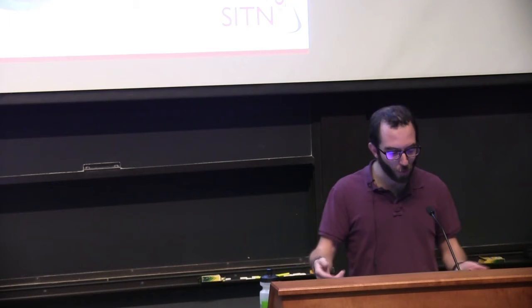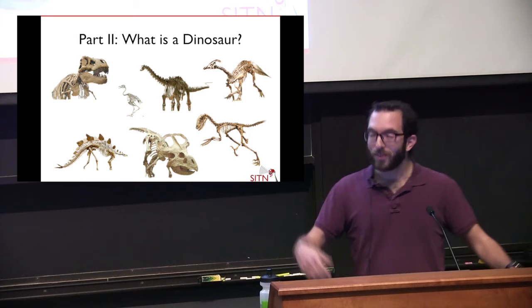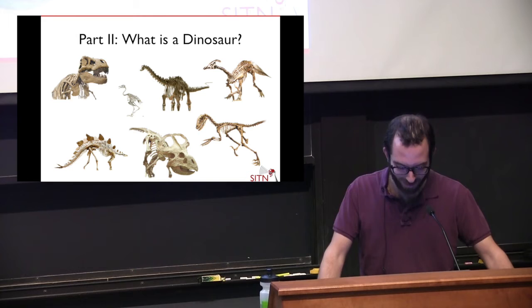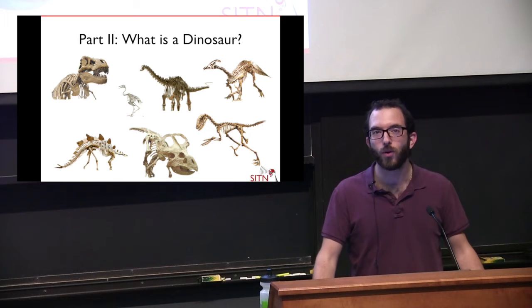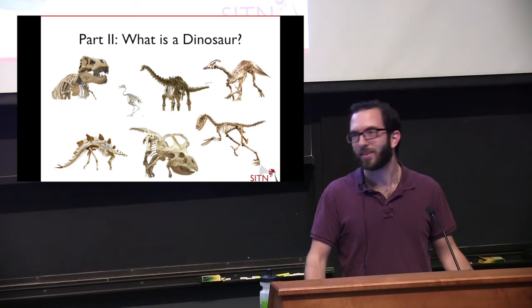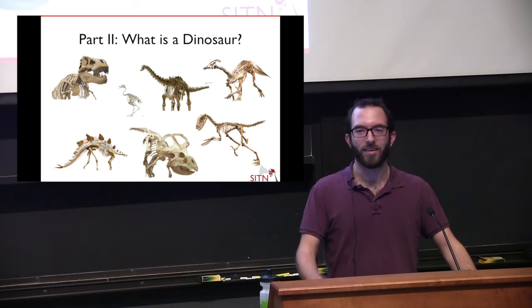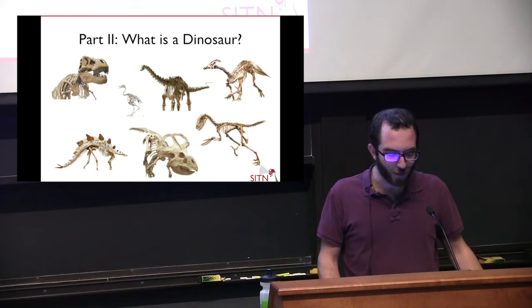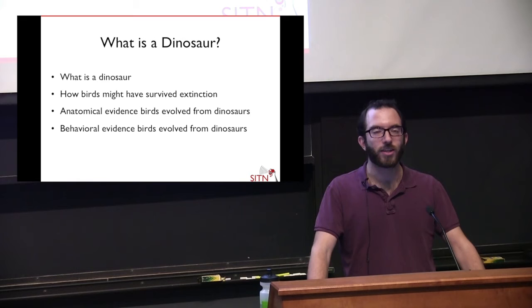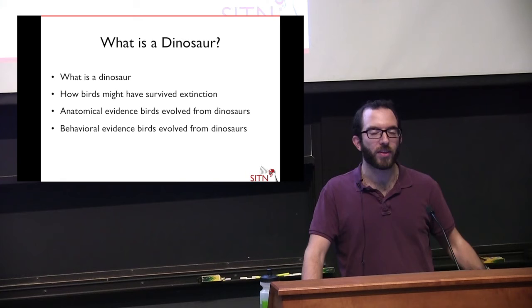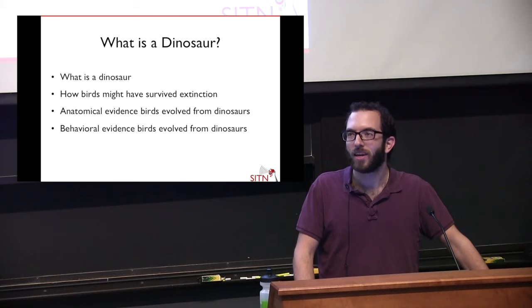Now that we're halfway through the talk, I thought it would be important for you to know what a dinosaur actually is. Just to let you know, all of these things shown up here are in fact all dinosaurs — and we'll get into why throughout the talk. For the lab tour, we'll be going to my lab, where we work on patterning the vertebrate limbs. I'll be showing you skeletons of various embryos — bird embryos, mouse embryos — some eggs, and live chicken embryos. The outline for this half: first I'll tell you what a dinosaur is, then how birds survived the extinction of the non-avian dinosaurs, then the anatomical evidence and behavioral evidence that birds evolved from dinosaurs.